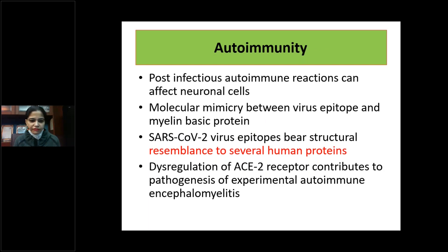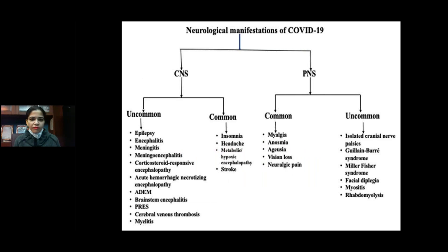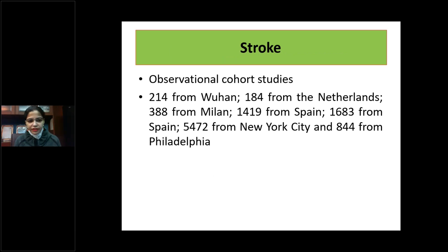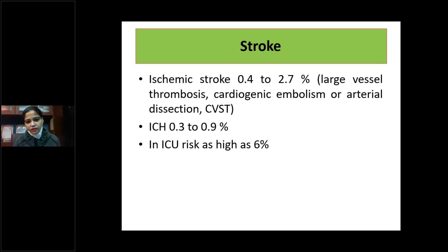Autoimmunity can lead to various neurological manifestations. Common ones include insomnia, headache, muscle pains, anosmia, and ageusia. Uncommon manifestations include seizures, meningoencephalitis, GBS, Miller Fisher syndrome, rhabdomyolysis, ADEM, and PRES syndrome. Regarding stroke, it is not entirely clear whether it results from increased thrombosis or comorbidities, but there is definitely an increased risk of ischemic stroke. In ICU settings, the stroke risk can be as high as six percent.